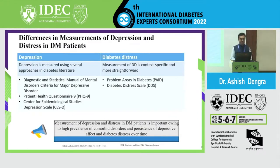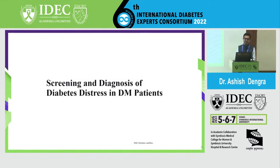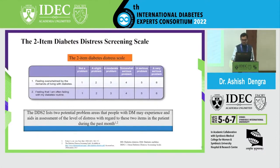Various diagnostic criteria for DD include the Problem Areas in Diabetes scale (PAID) and the Diabetes Distress Scale (DDS). For depression, there is PHQ-9 and the Center for Epidemiological Studies Depression Scale (CES-D). Measurement of depression and distress is important owing to the high prevalence of comorbid disorders and persistence of depressive affect and diabetes distress over time. There are limitations in the previously used two-point scale, which only asked if the patient felt overwhelmed or was failing their diabetes routine — that was not adequate.